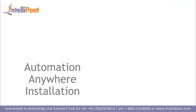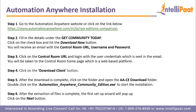Now let's see how to install Automation Anywhere. Go to the Automation Anywhere website and fill in all the details under the community edition. Click on the checkbox and hit the download now button. You'll receive an email with the control room URL, username, and password. Click on the control room URL and log in with the user credentials sent in the email. You'll then be taken to the control room home page, which is a web-based platform. Find the download client button and click on it — a zip folder will be downloaded.